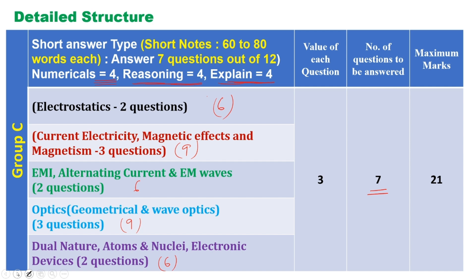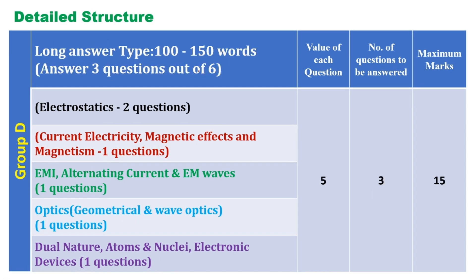For Group D, the long type answers: there are 6 questions total and you answer 3. Electrostatics is an important chapter with a long question. Current electricity, magnetic effects and magnetism — 5 marks. Alternating current, EMI and electromagnetic waves — 5 marks. Optics — 5 marks. Dual nature, atoms and nuclei, and electronic devices — 5 marks. Each question carries 5 marks, so 3 questions gives you 15 marks.